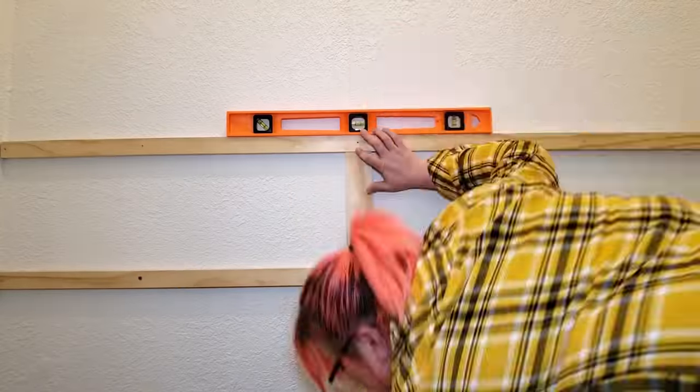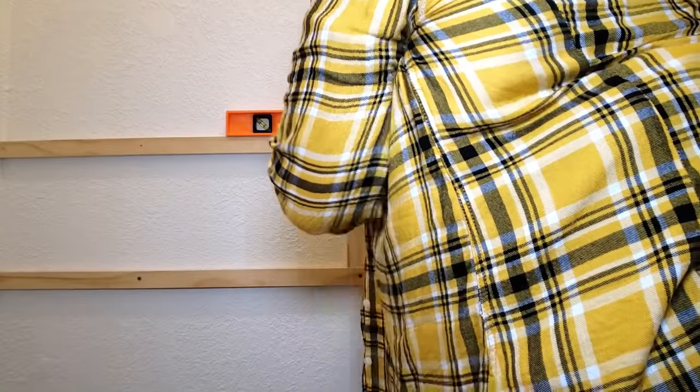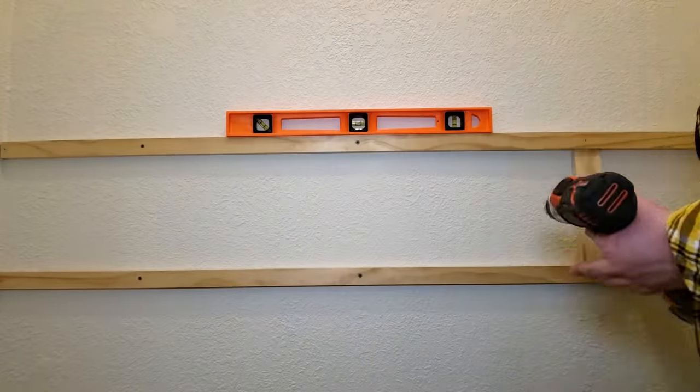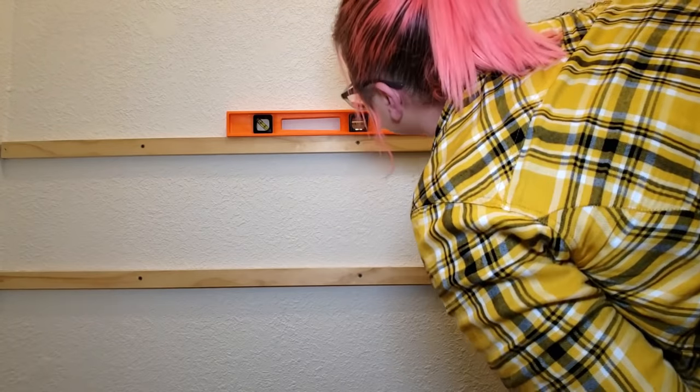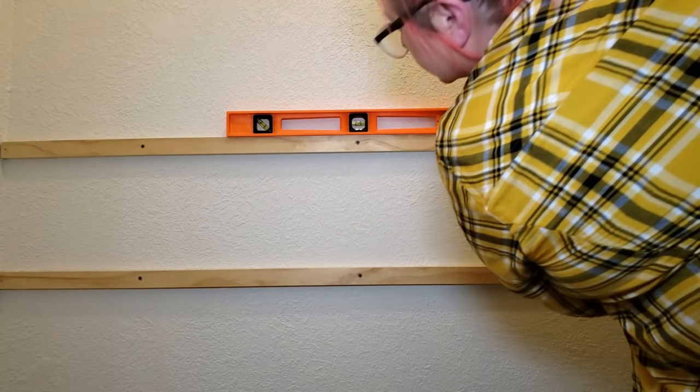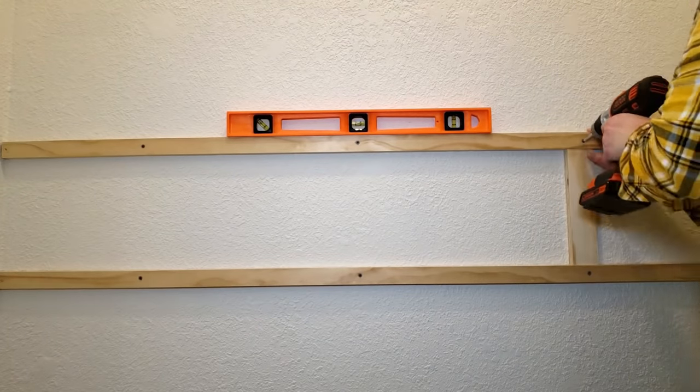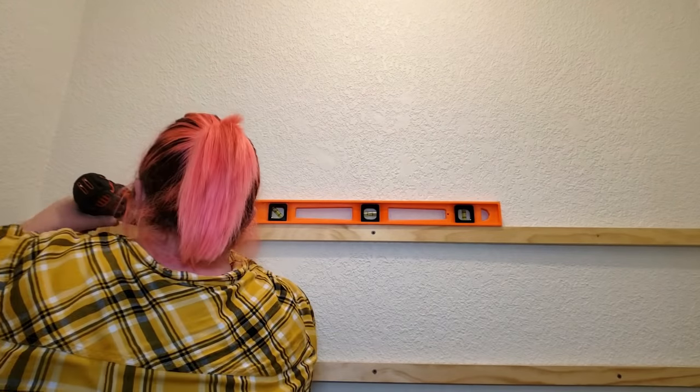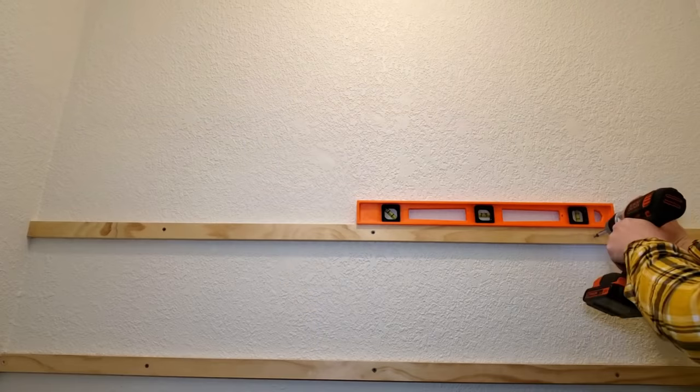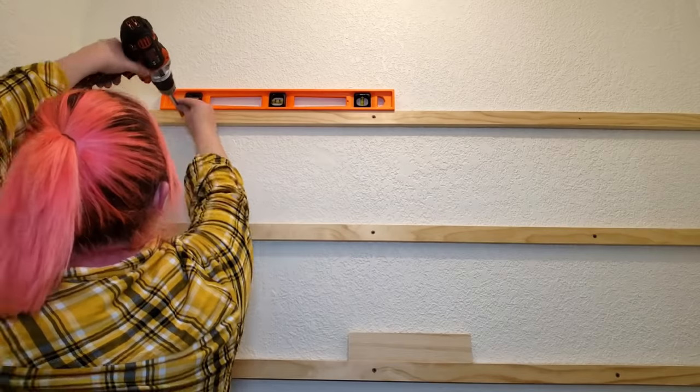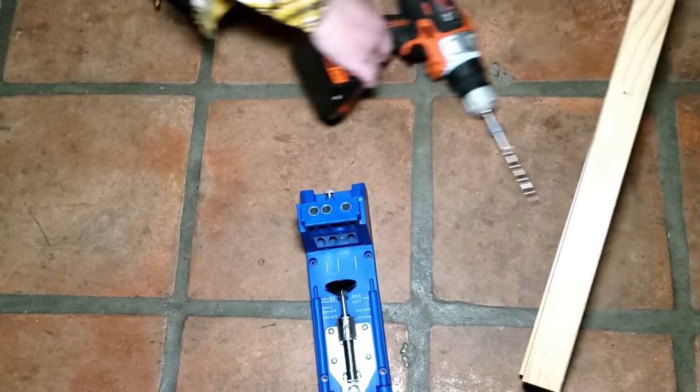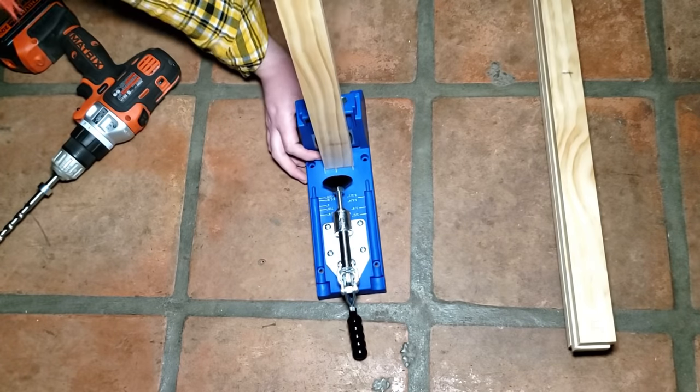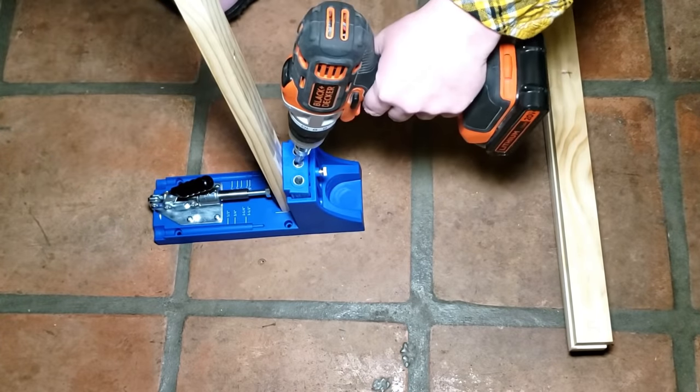When making spacers, you want to make sure that they are the length of the space that you need between your shelves minus the height of your cleats. So, for 12 inches between shelves, subtract your one and a half inch cleat and then make a ten and a half inch spacer.